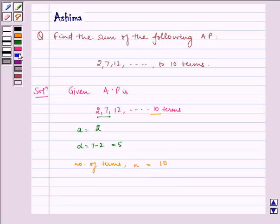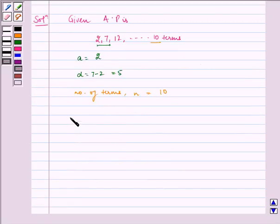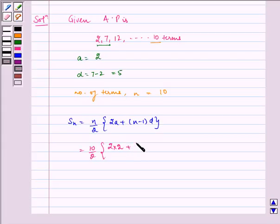So applying the formula we discussed in key idea, we get Sn equals n by 2 times 2a plus n minus 1 times d, which is equal to 10 by 2 times 2 multiplied by 2 plus 10 minus 1 multiplied by 5.